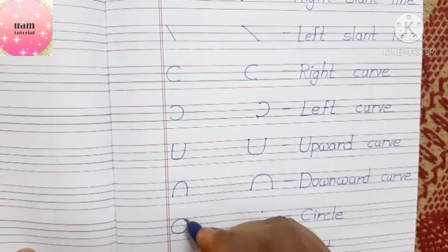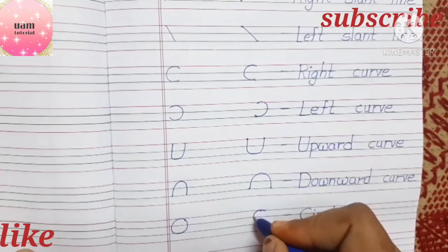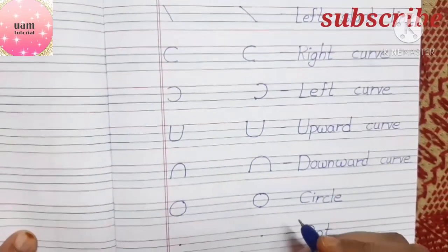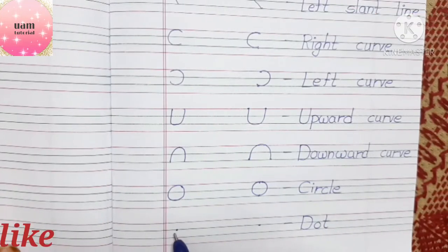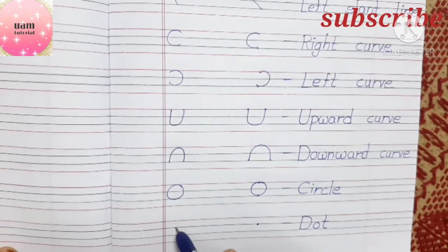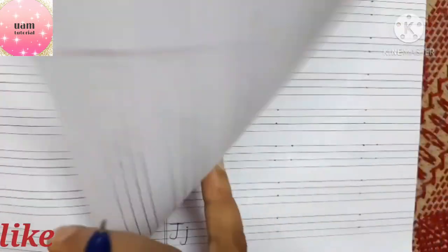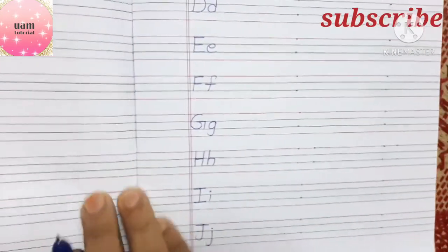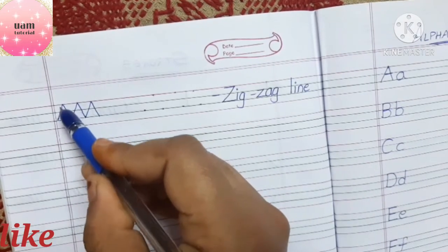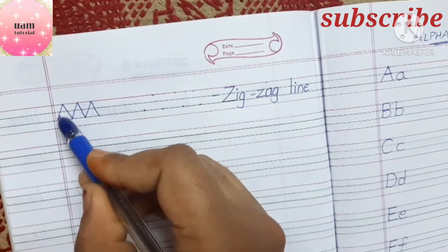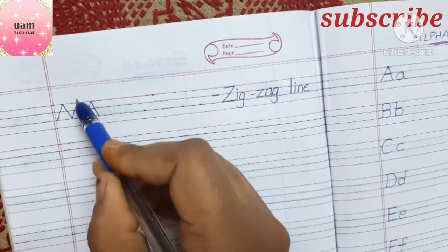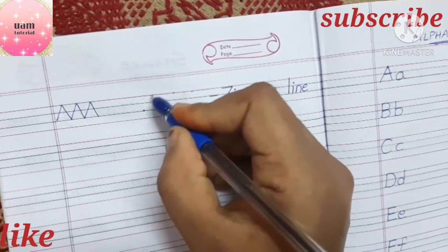The next stroke is a circle — from the first line to the third line we write a circle. Then we have a dot. And finally we have lines going towards the right written from right to left — these are slant lines, so we call them zigzag lines.